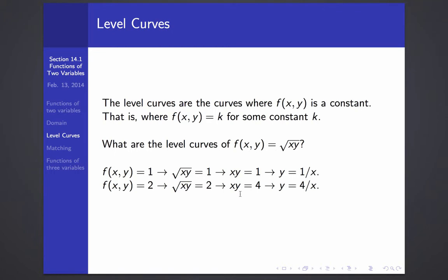Similarly, the set of points where f(x, y) is 2 gives us the curve x times y equals 4 or y equals 4 over x. And f(x, y) equals 3 gives us the level curve y equals 9 over x. Let's look at some of these curves on a graph.